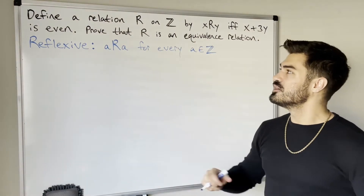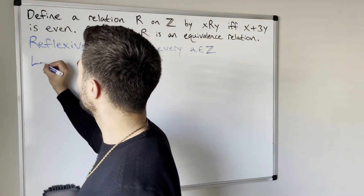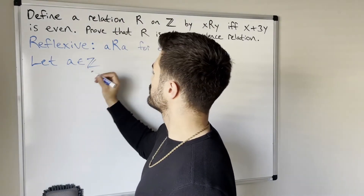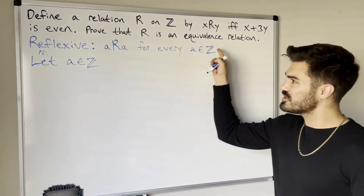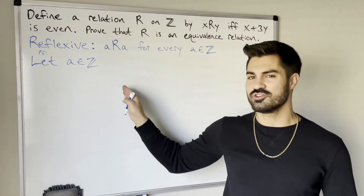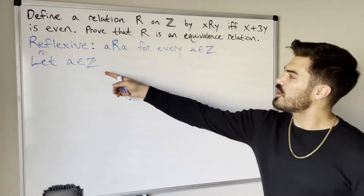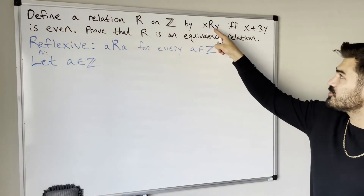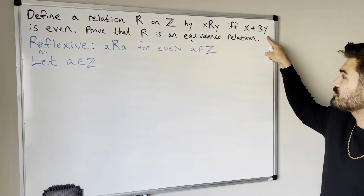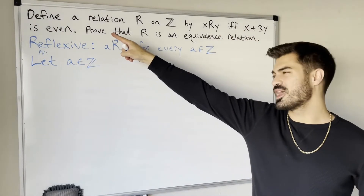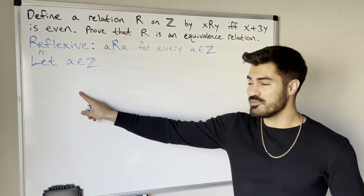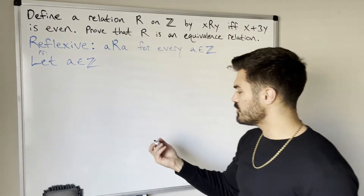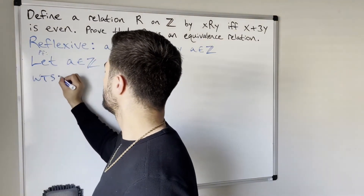Now for the proof: let a be an arbitrary integer. We want to show that a is related to itself. By the definition of our relation, that means we want to show that a plus 3a is even, and from that we can conclude that a is related to a.